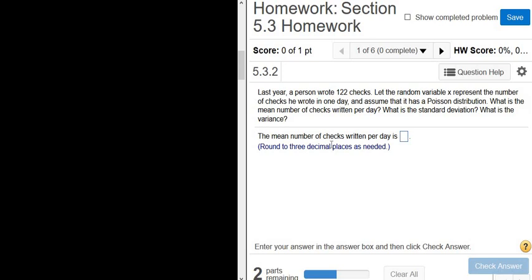Last year, a person wrote 122 checks. Let the random variable x represent the number of checks he wrote in one day, and assume that it has a Poisson distribution. What is the mean number of checks written per day?